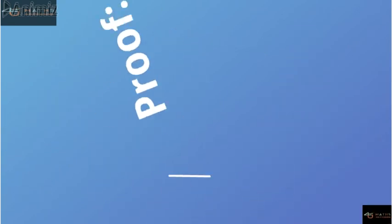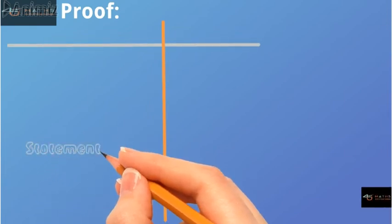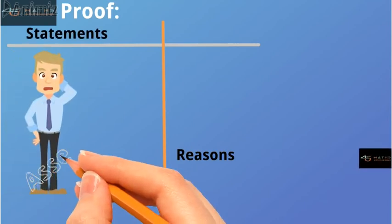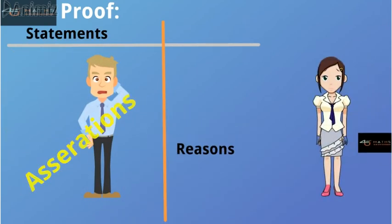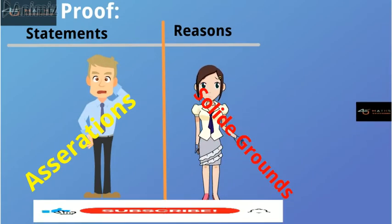Proof: The proof has two portions, statements and reasons. In statements we provide the assertions, while in reasons we provide the solid grounds for those assertions.